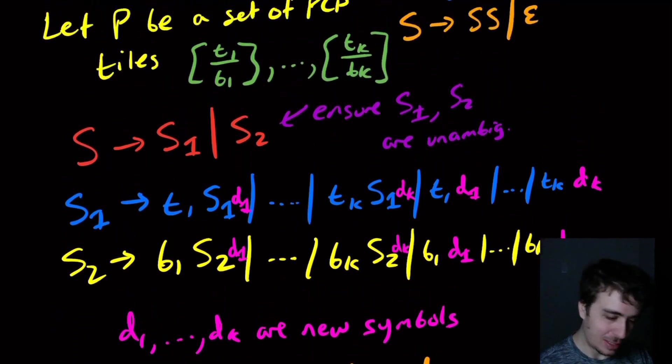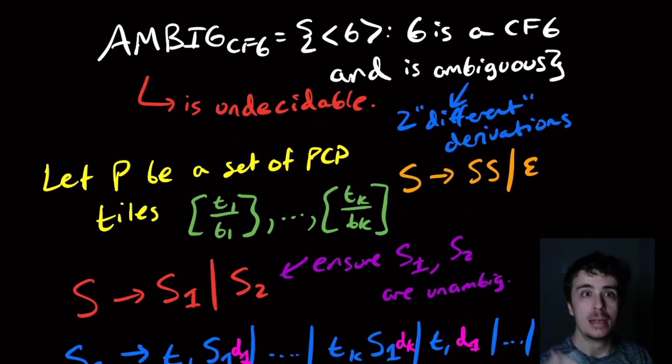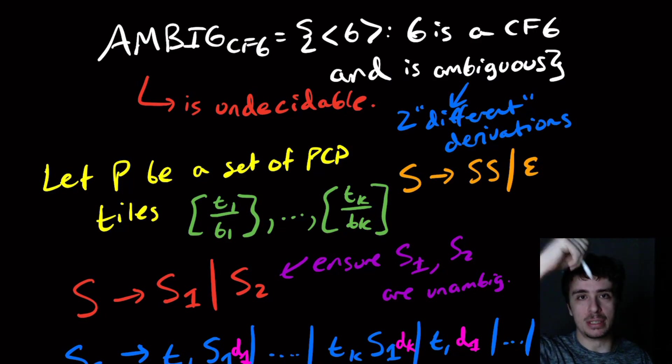This is actually a pretty slick proof showing that deciding ambiguity for context-free grammars is undecidable using the Post Correspondence Problem. You can prove other problems in a very similar way using PCP. Hopefully that was interesting. Leave your thoughts about ambiguous context-free grammars in the comments down below. As always, please like the video and subscribe to the channel. It really helps us out. Thanks for watching, and I'll see you next time.